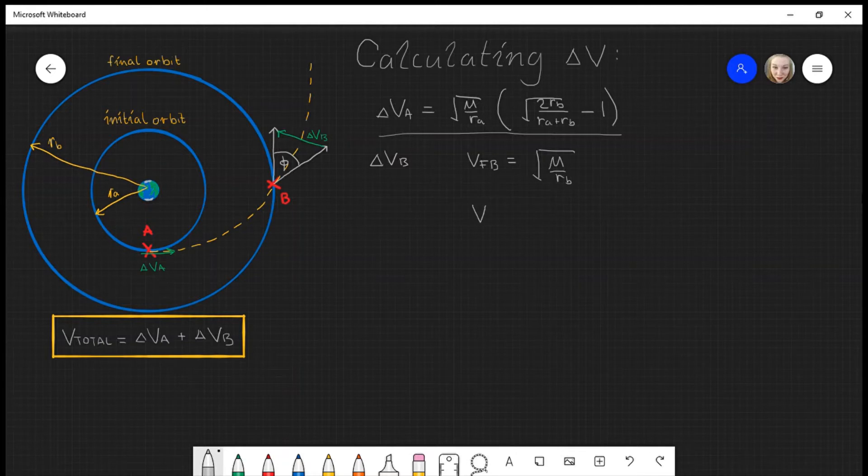Next, I'm going to calculate the velocity of the transfer ellipse, hence V_T at point B, hence V_TB. This is just the velocity of the ellipse. Do check out the video on Holman transfer to see these in more detail.